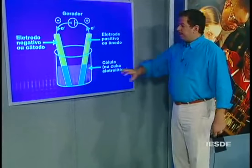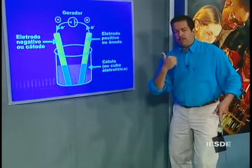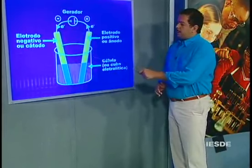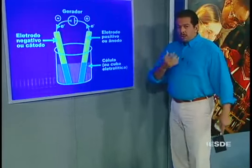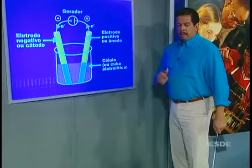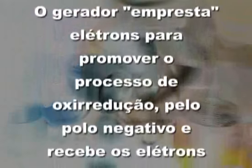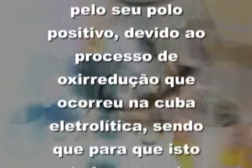Because the process is not spontaneous, if you unplug the power, if the generator stops, everything stops — there is no more supply of electrons for reduction to occur, and the other side does not oxidize either. The entire electrolysis process depends on the generator, which provides electrons via the negative pole and receives them via the positive pole. For this to occur, the electric current must be continuous, the voltage sufficient to drive the process, and the ions must have freedom of movement — either by fusion or by dissolution in an ionizing solvent such as water.